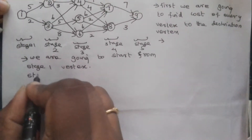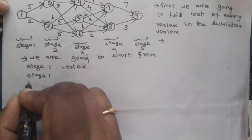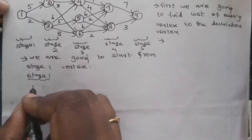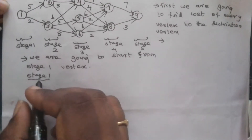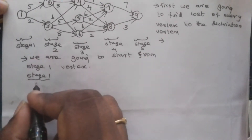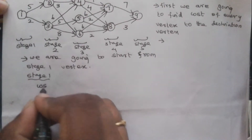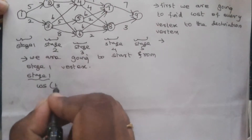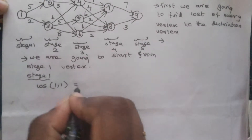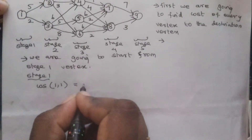Now we are going to find out the cost of the stage 1 vertex. The cost of (1,1) is 0.